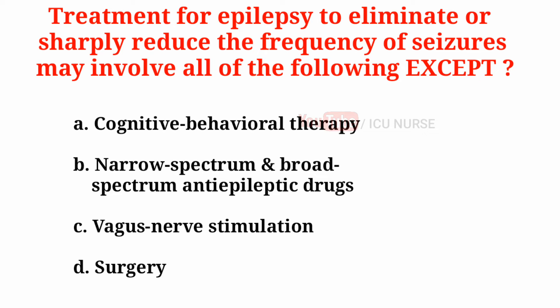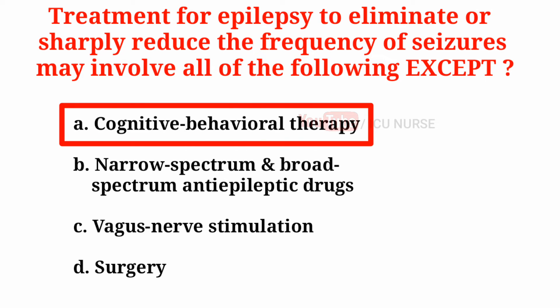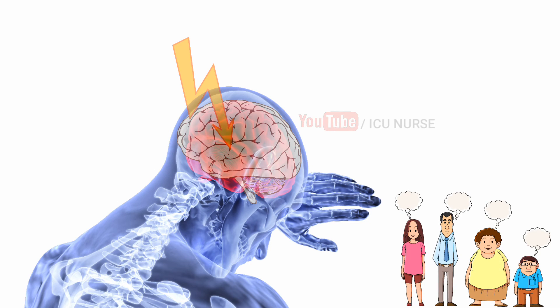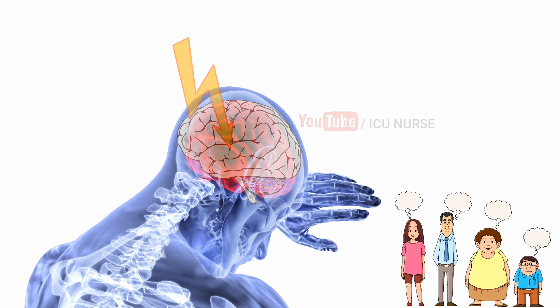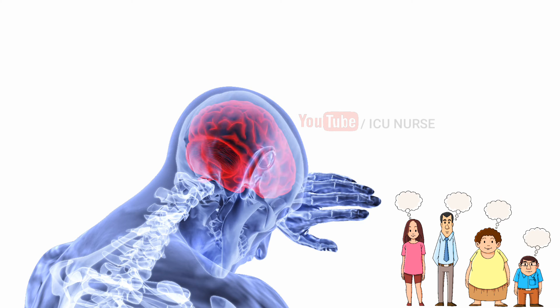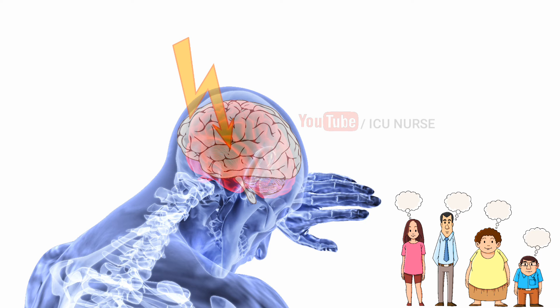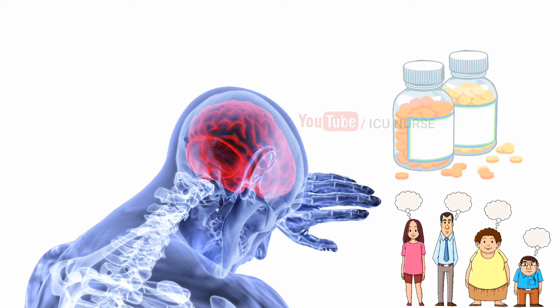Treatment for epilepsy to eliminate or sharply reduce the frequency of seizures may involve all of the following except: A. Cognitive behavioral therapy, B. Narrow spectrum and broad spectrum anti-epileptic drugs, C. Vagus nerve stimulation, D. Surgery. The correct answer is A. Cognitive behavioral therapy. CBT may be considered as adjunctive therapy for behavioral or emotional difficulties, but it is not a treatment for the seizure disorder itself, which is controllable with anti-epileptic drugs for most affected persons.